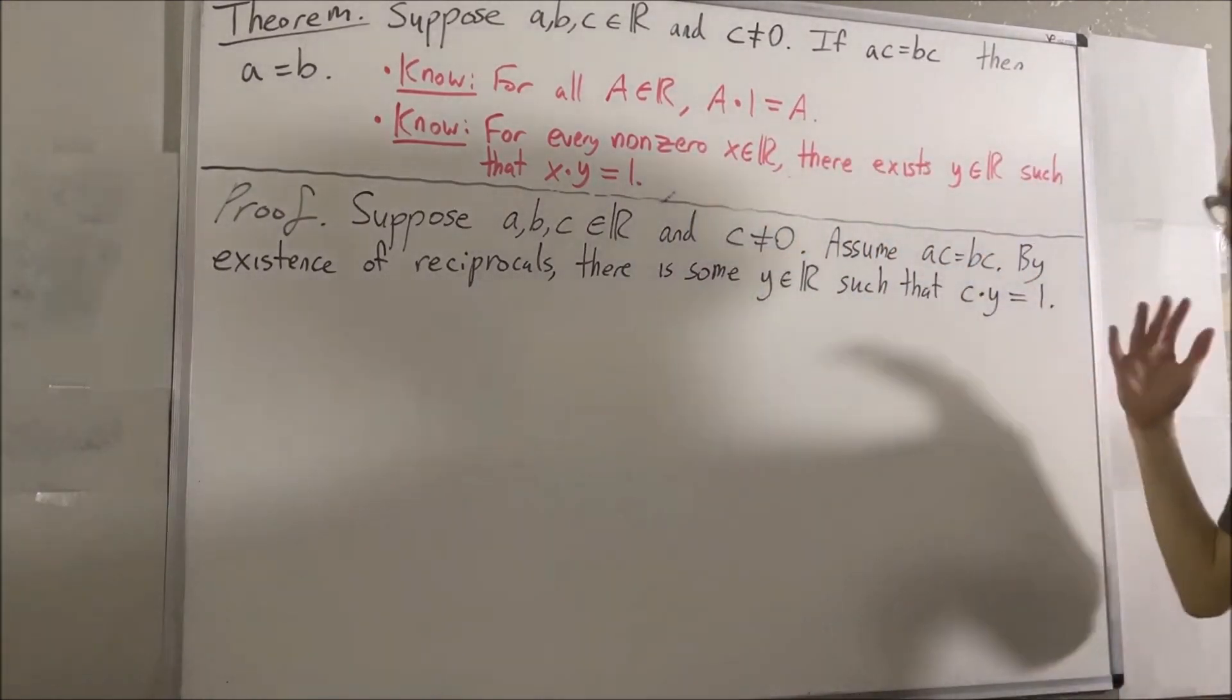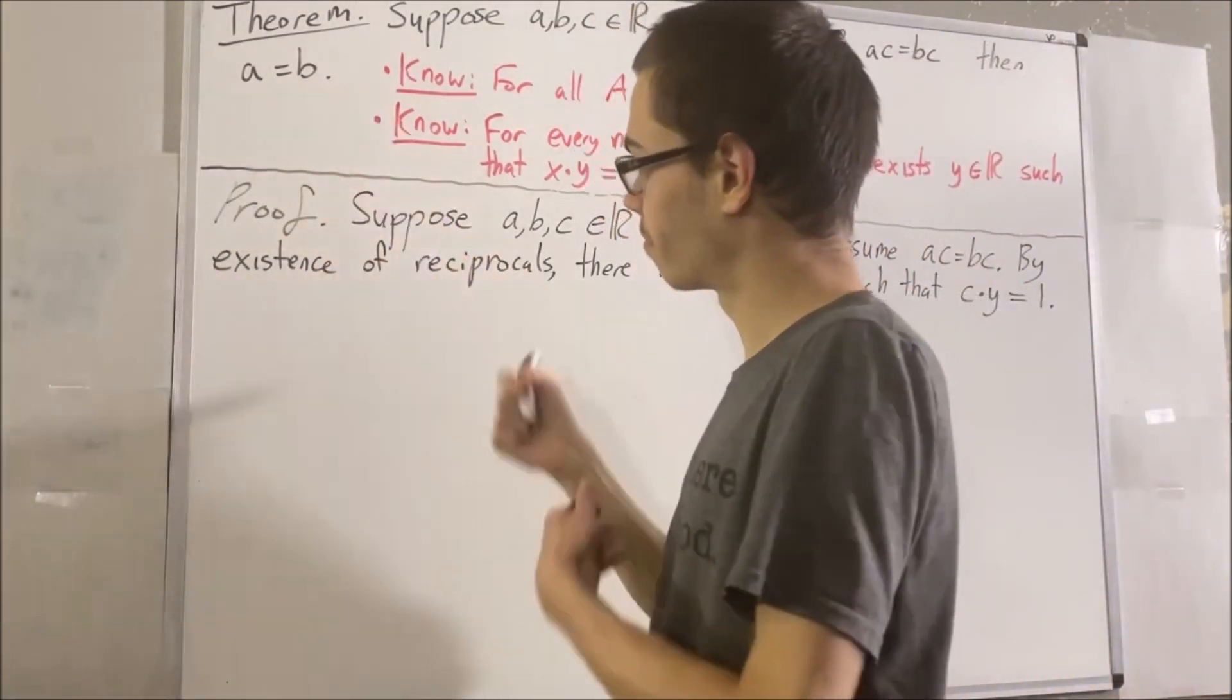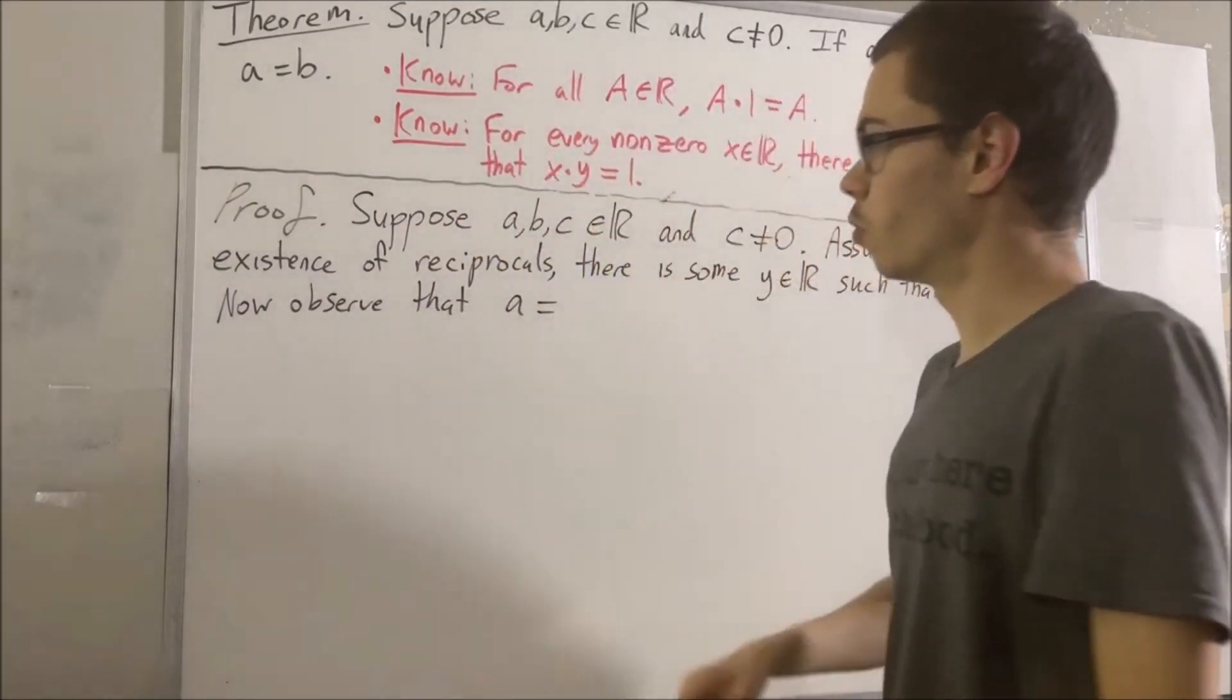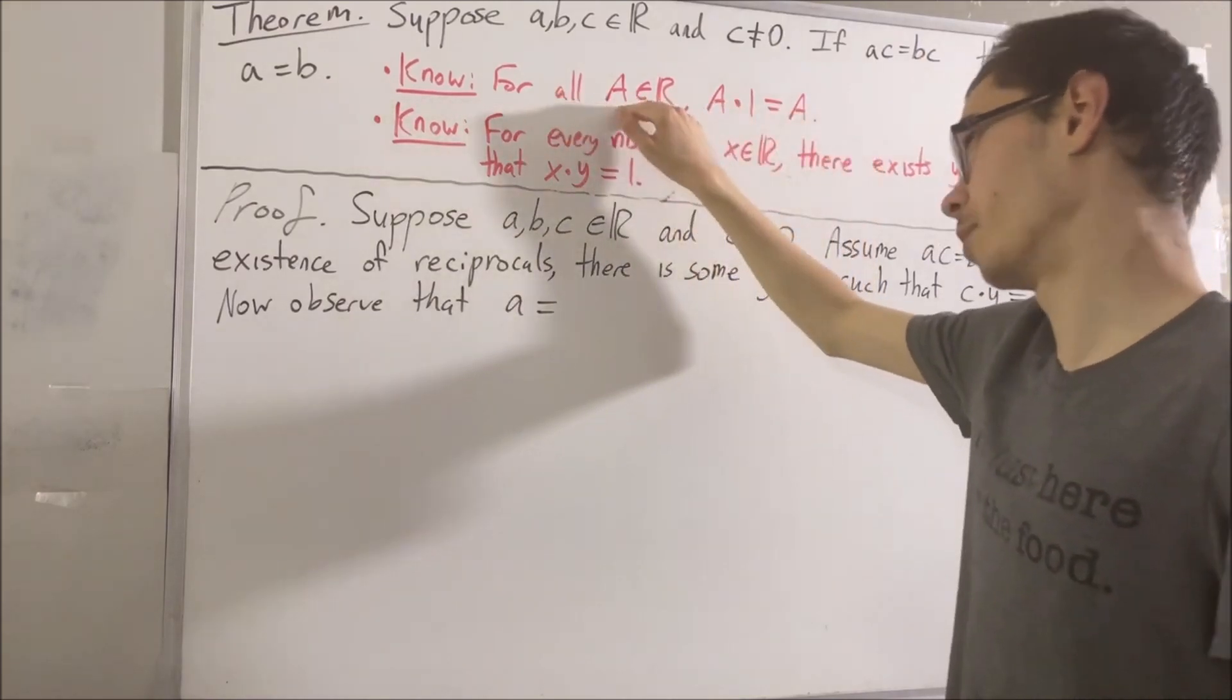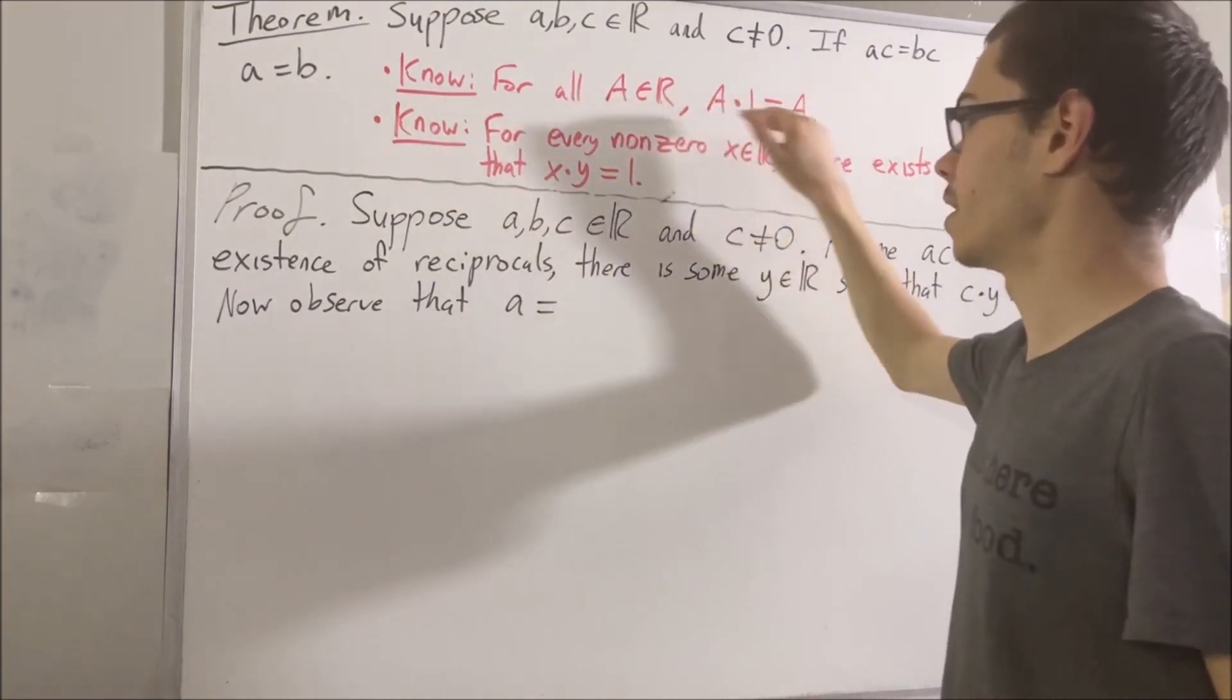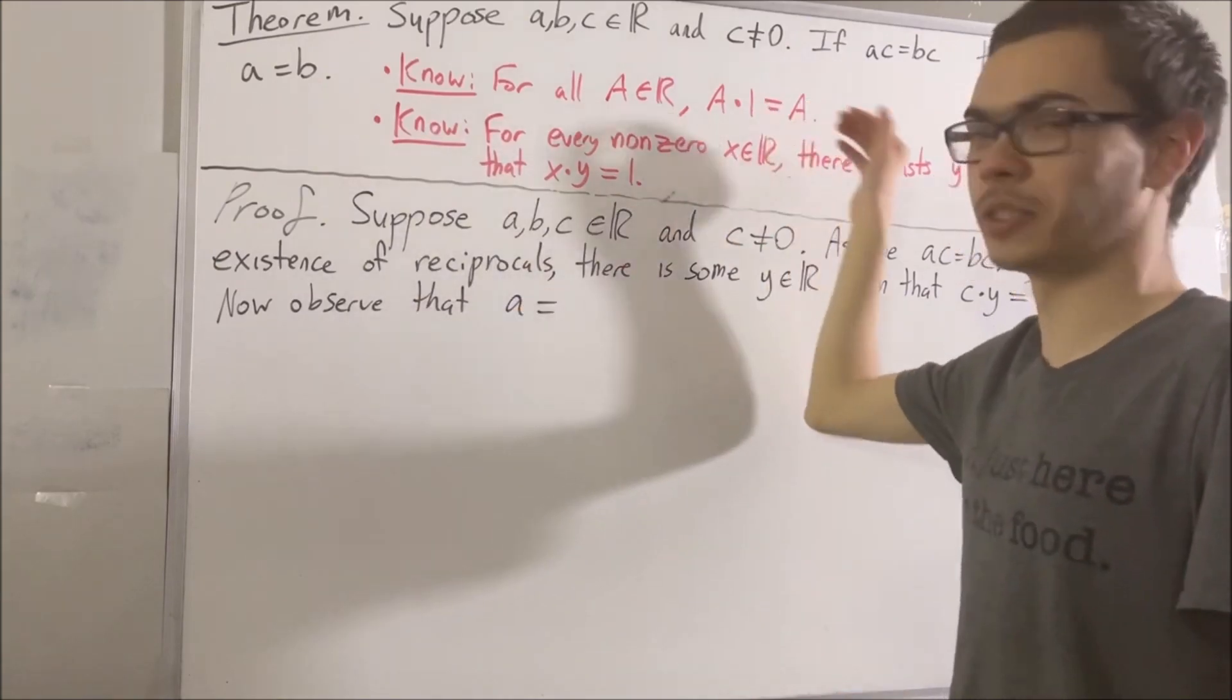Now we are going to establish a chain of equalities showing A is equal to B. To start, we know that A is equal to A times 1, because for every real number, capital A, we have that capital A times 1 is equal to capital A. So, if we take this statement and substitute capital A for A, we get that A times 1 is equal to A.